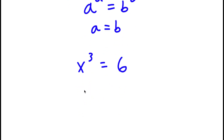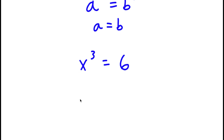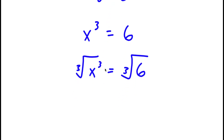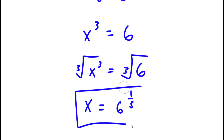I'm going to take the cube root on both sides. The cube root of x to the power of 3 is equal to the cube root of 6. The cube root of x to the power of 3 is simply x, and the cube root of 6 is the same thing as 6 to the power of 1 over 3. So this is my answer.